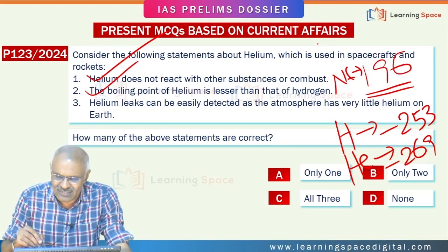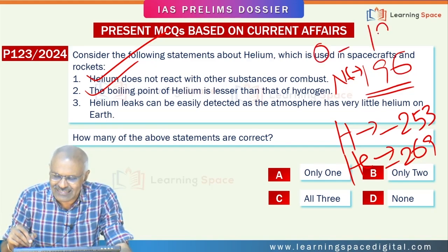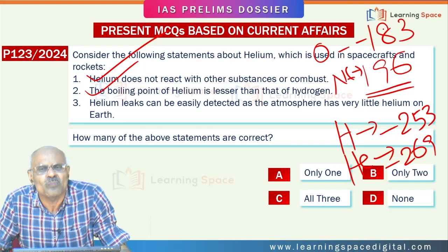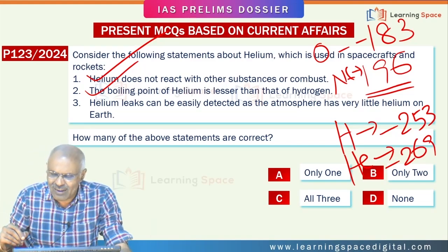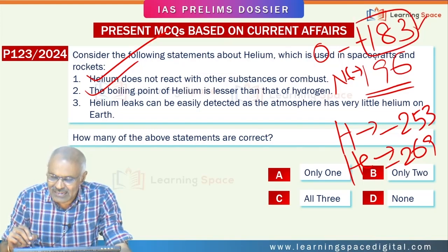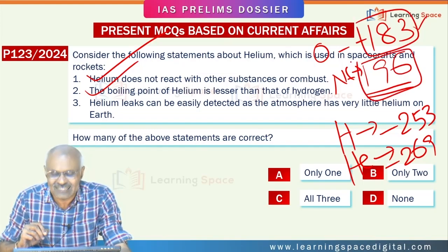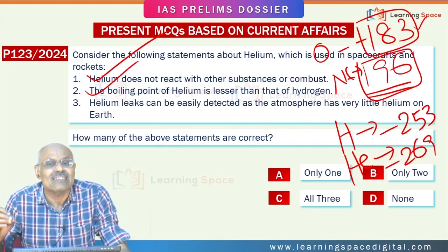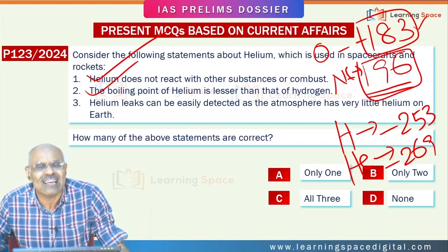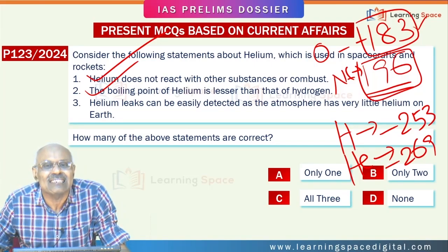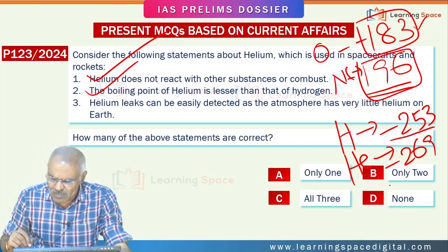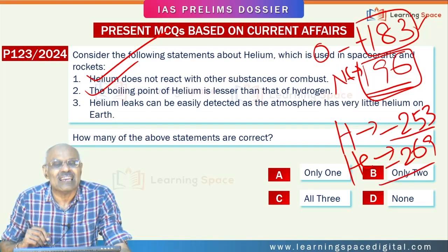And if you look at oxygen, its boiling point is around minus 183°C. So to summarize: oxygen is minus 183°C, nitrogen is minus 196°C — that is its boiling point, meaning you reach minus 196°C to get nitrogen in liquid state. Hydrogen is minus 253°C, and helium is minus 269°C.